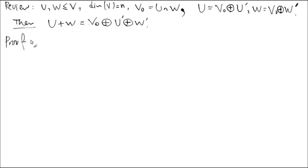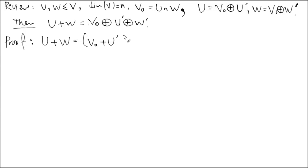Here's a proof of this theorem. You start with u plus w first, and you replace u with what we know: u is v0 plus u prime, so I can write v0 plus u prime. I'm not writing the direct sum symbol here — all I care about is just a regular plus. Is that okay? Not putting the direct sum symbol?